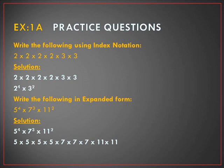Now that we have learned about index notations, let us solve some simple questions. The first question says: write the following using index notation. As 2 is repeated four times, we will write 2 to the power 4, and as 3 is repeated two times, we will write 3 to the power 2. Therefore, in index notation form it is written as 2 to the power 4 × 3 to the power 2.